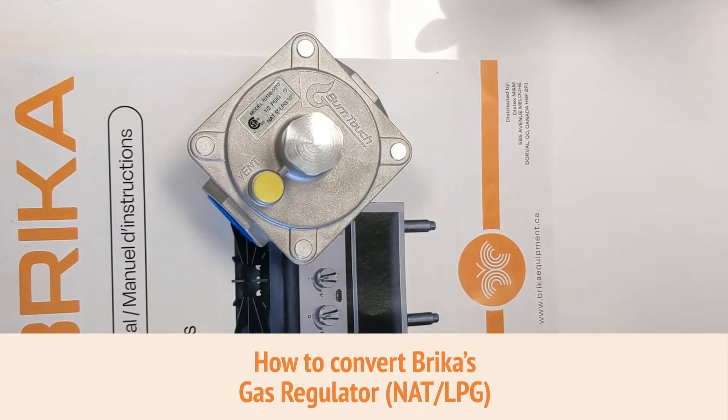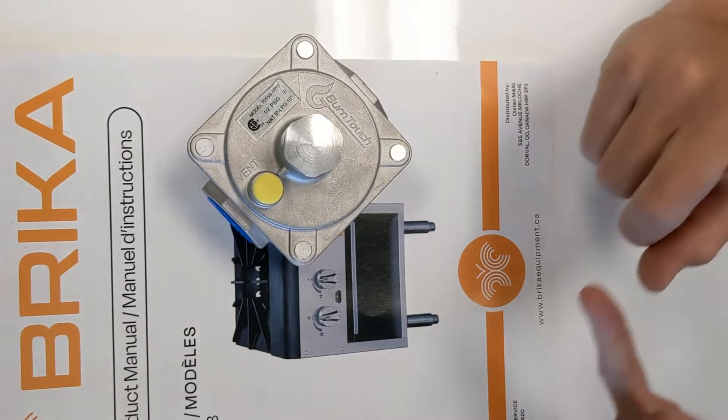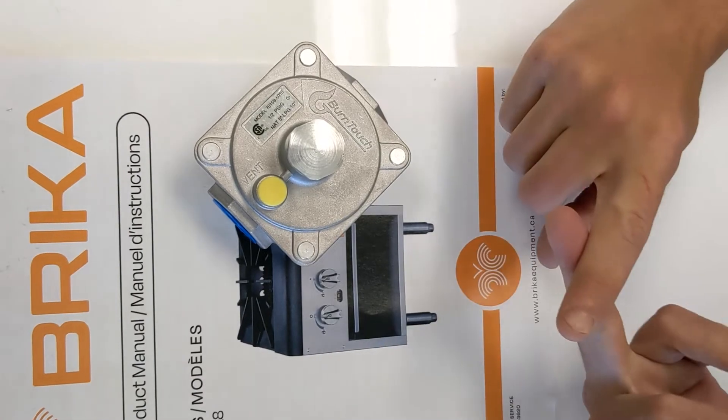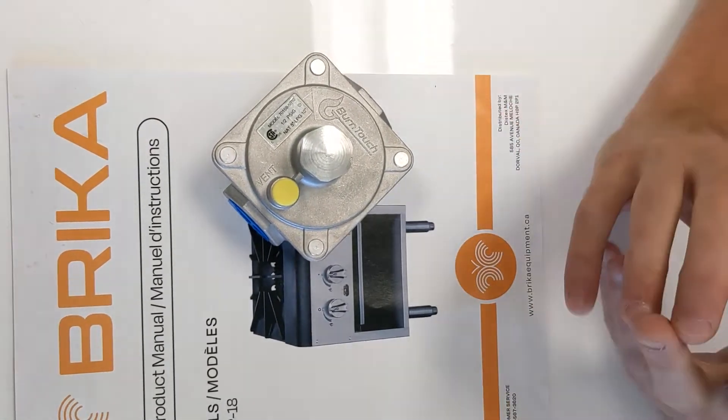With most of our Bricka units, the conversion kit comes with it. So with the griddles, the burner range, the stock pot, the brawler, there's a conversion kit.